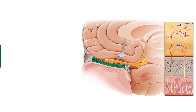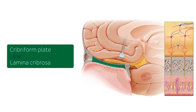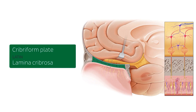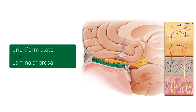Let's move on to discuss some bony and membranous structures related to this nerve. The cribriform plate, as we mentioned previously, is part of the ethmoid bone, and it separates the nasal cavity from the brain. In the sagittal plane, we can see that it's a horizontal bony lamina, and has a sieve-like structure that transmits the fibers of the olfactory nerve. This structure also supports the olfactory bulb, which we will talk about later on in this tutorial.